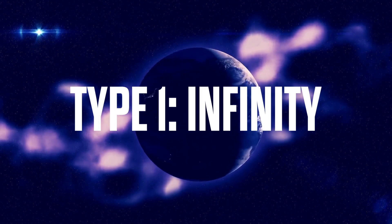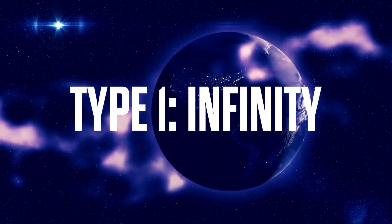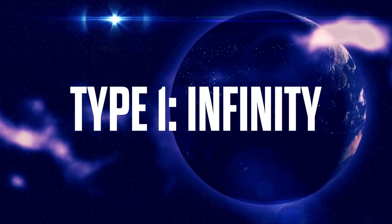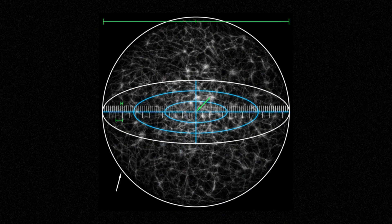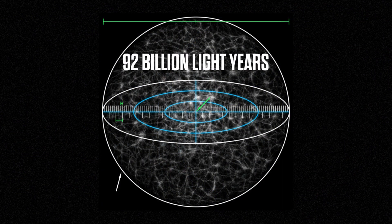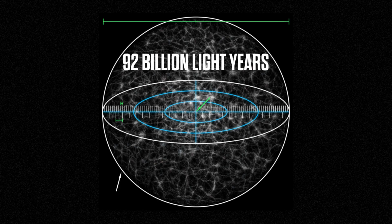Tegmark's first type relies on space being extremely big, indeed, perhaps infinite in size. While the visible universe is a sphere centered on the Earth and about 92 billion light-years across, that is only the part of the universe we can see.